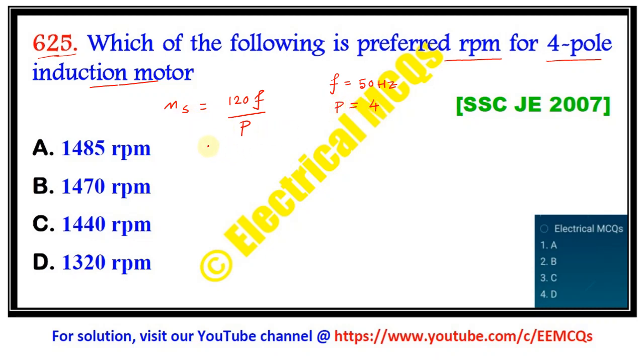So the synchronous speed here is 120 into 50 divided by 4. This will give you 1500 RPM.